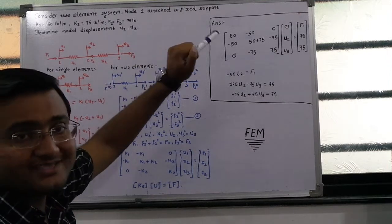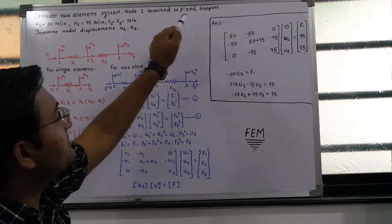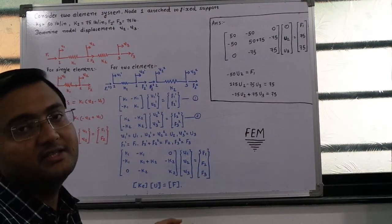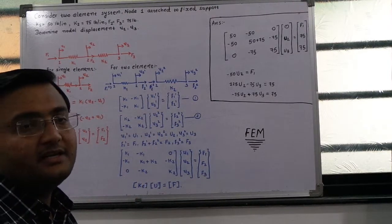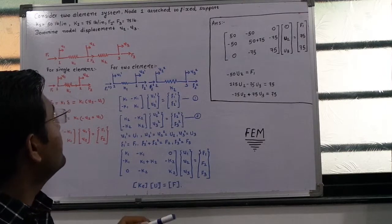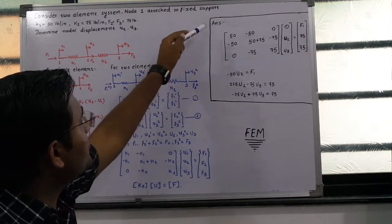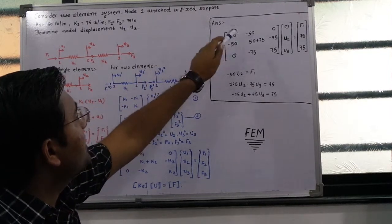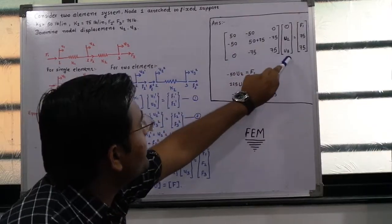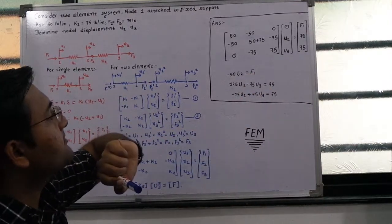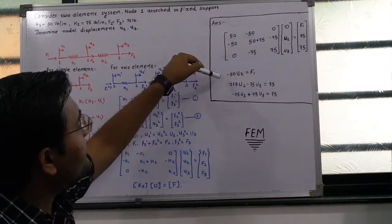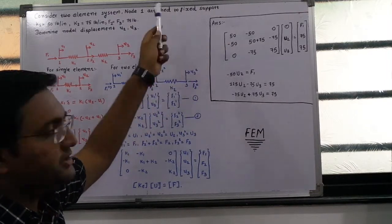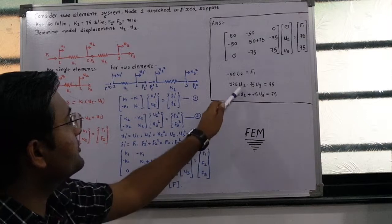For those who are studying FEM for the first time, this example is the best one to begin with. Looking at the answer, it contains matrices — something like 50, minus 50 — a first matrix, a second matrix, and a third matrix. Then the multiplication of these matrices gives equations used to find U2 and U3.